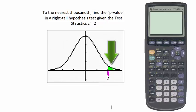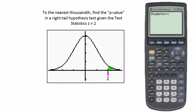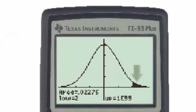We can solve this using either the ShadeNorm or the normal cumulative density function. For ShadeNorm, go to the second distribution button, then to the draw menu and select number 1, the ShadeNorm function. Since we're shading above 2, input 2 as the z-score, then a comma and e99, and hit enter. The distribution is drawn with the shaded area given as 0.02275.